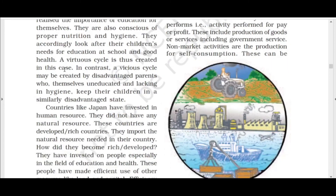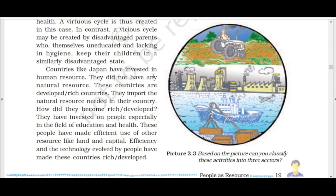Countries like Japan have invested heavily in human resources. They did not have abundant natural resources, yet they became developed, rich countries by importing the natural resources they needed. How did they become rich? Because they invested especially in the fields of education and health. The people of Japan made efficient use of other resources like land and capital, and this country became a rich and developed nation.